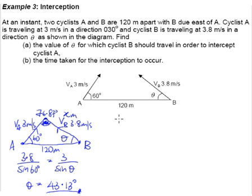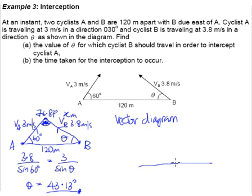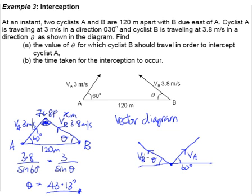A and B will intersect each other. In order to find theta, the first thing we do is draw the vector diagram. We draw vector A going up this way — VA — and vector B moving up this way — VB. Then we fill in the blanks: this angle here is 60 degrees, this angle here is our theta which we need to find, B is travelling at 3.8 meters per second, and A is travelling at 3 meters per second.